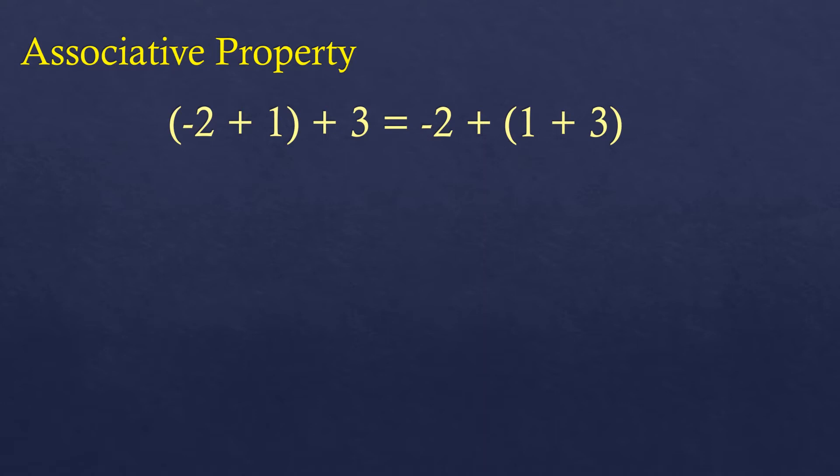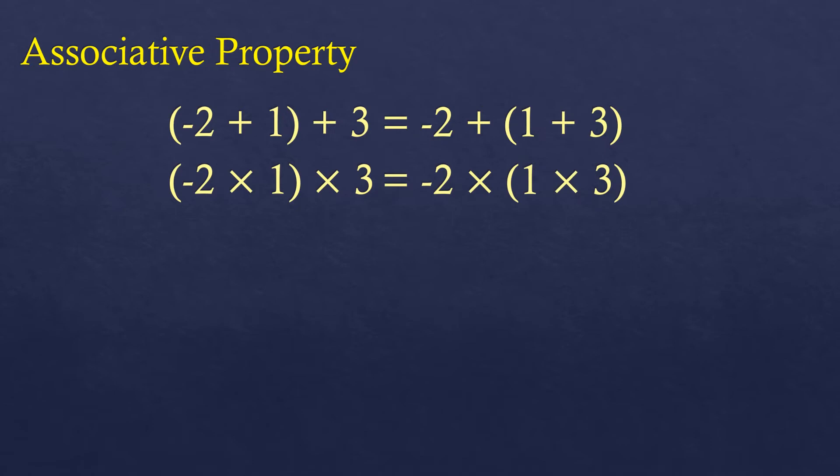Negative two plus one is negative one, plus three is positive two. On the other side, you add one and three first, so it's four, plus negative two, and the result is still positive two. So it's the same answer even if you change the grouping. The same is true for multiplication — if you multiply negative two and one first before multiplying by three, it results to negative six, which is the same as multiplying three and one first to get three, then times negative two, still negative six.